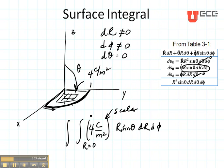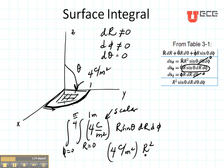R goes from zero to one meter. Phi goes from zero to pi by four. So my integration is going to come out four coulombs per meter squared times R squared over two times the cosine of theta.